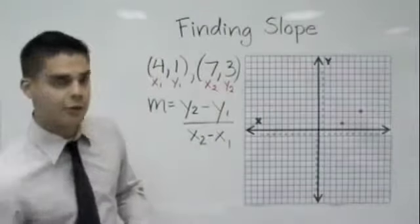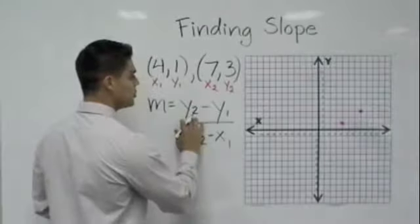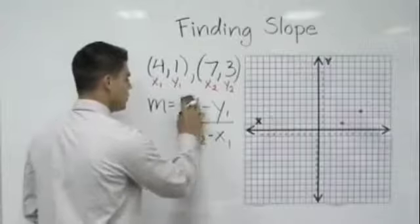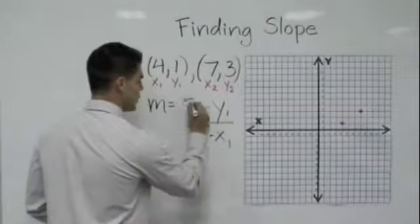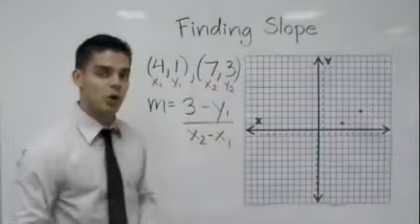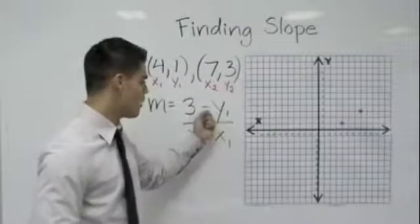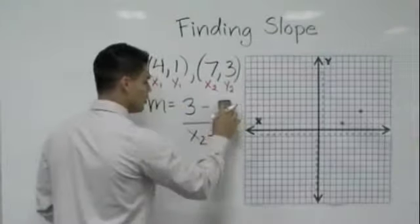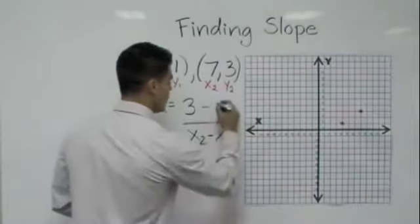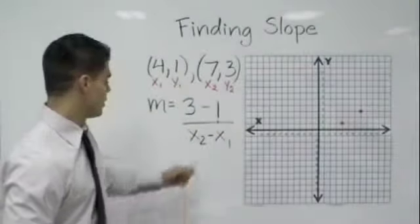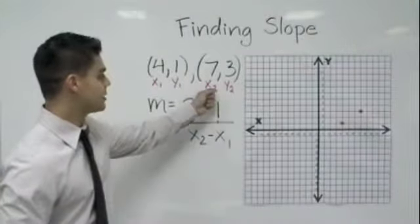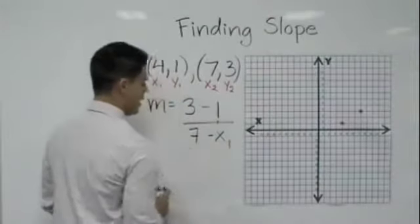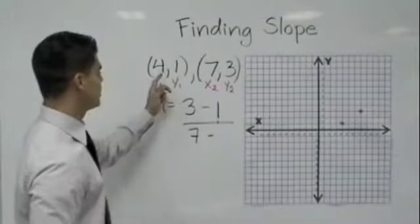Let's go ahead and now plug the values in. So here we go. y2 is actually going to equal 3 so I'm going to substitute in a 3. Now that minus sign must always stay there. Very important that minus sign stays in our equation. Now y1 is going to be 1 so I'm going to erase y1 and plug a 1 in there. Now x2 is 7 so let's take that x2 out and plug in a 7 and x1 is 4.